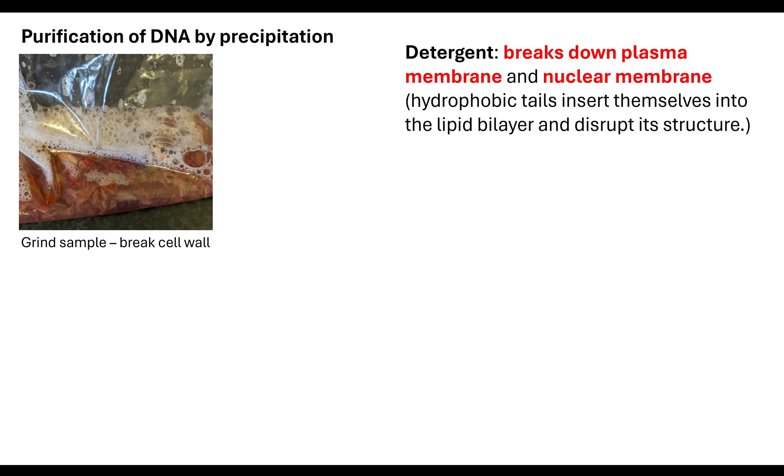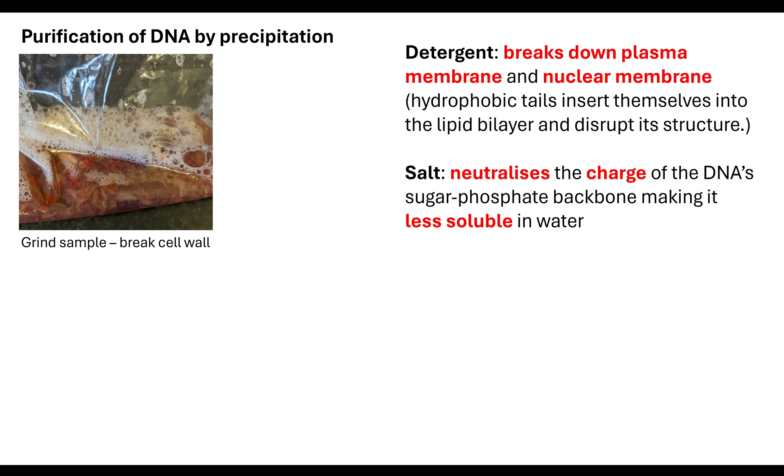First of all, we need to actually break apart the cell wall. That strong cellulose cell wall needs to be broken for us to be able to access the plasma membrane and the nuclear membrane. Whenever we do this, we first would grind our sample up. Here I'm grinding up some strawberries to break the cell wall. Then I've added in some detergent, some washing up liquid, and that broke down the plasma and nuclear membrane.